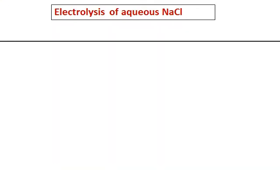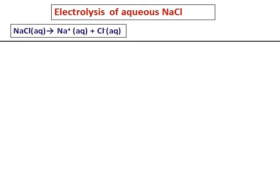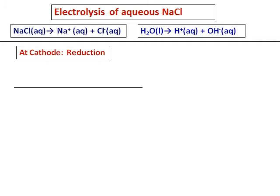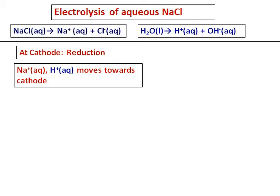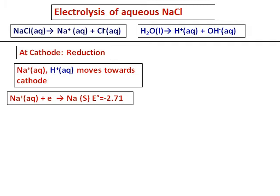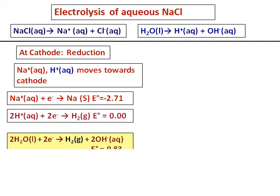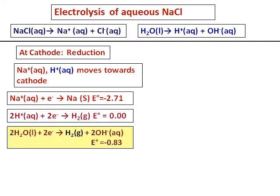Let's do the electrolysis of aqueous sodium chloride. Since water is also present, sodium chloride ionizes into sodium ions and chloride ions, and water also ionizes into hydrogen ions and hydroxide ions. At the cathode, sodium ions, hydrogen ions, and water are all present. Sodium ion can accept an electron and reduce to sodium, or hydrogen ion can accept two electrons and become hydrogen gas, or water can also be reduced to hydrogen. Out of these three reactions, the hydrogen gas reaction occurs most prominently, so we get hydrogen gas at the cathode.